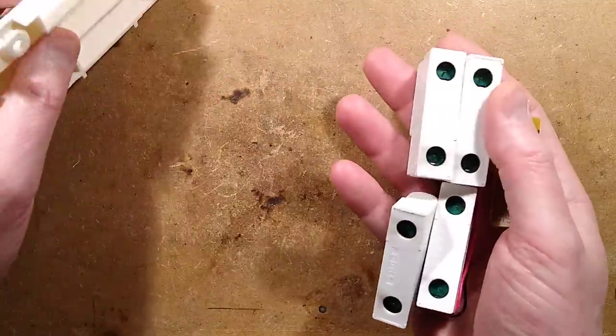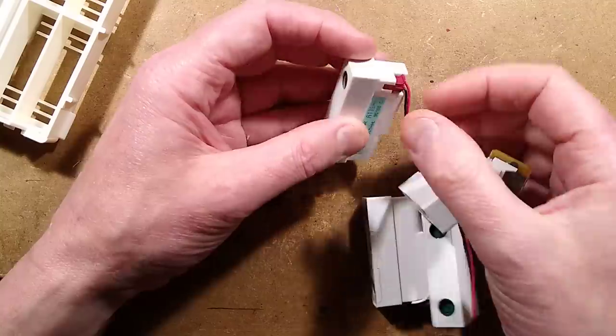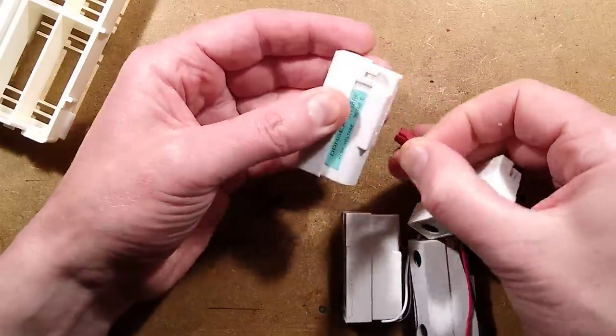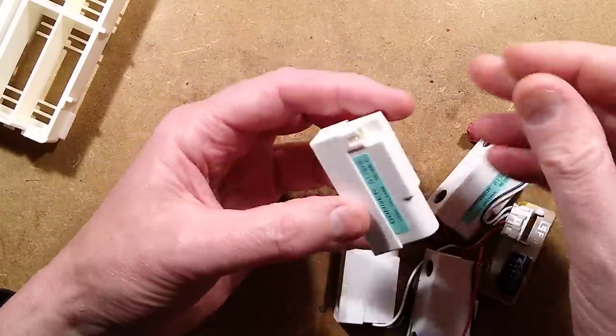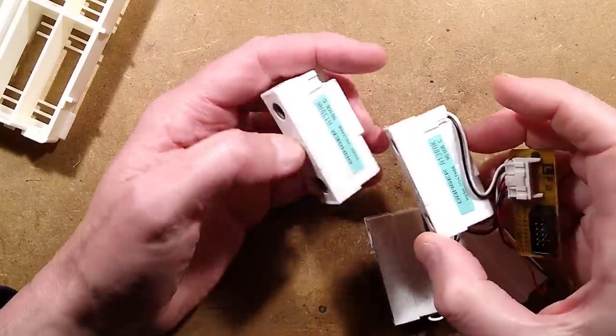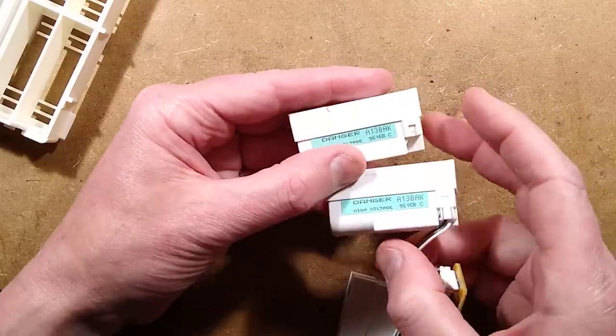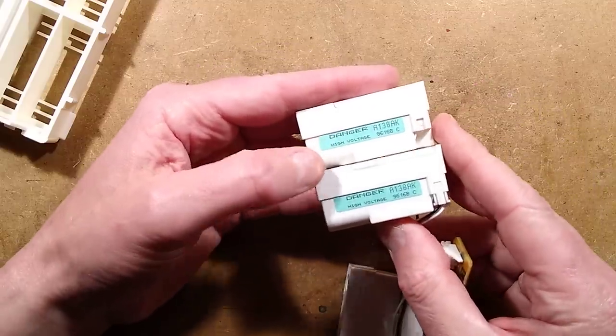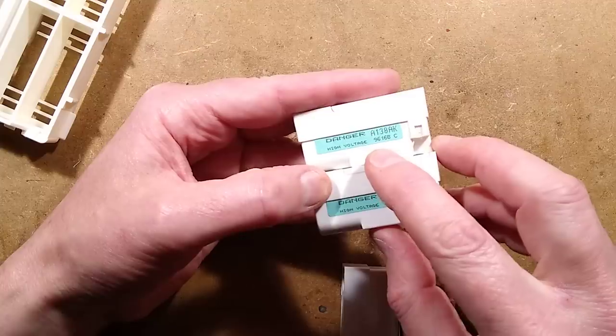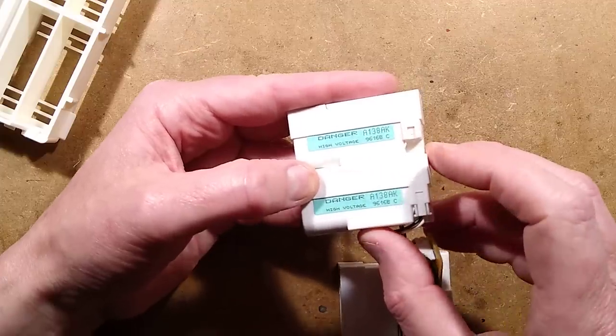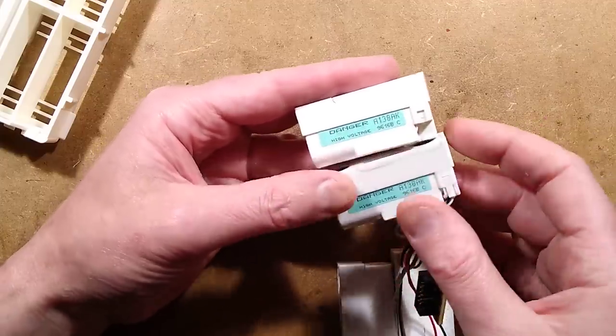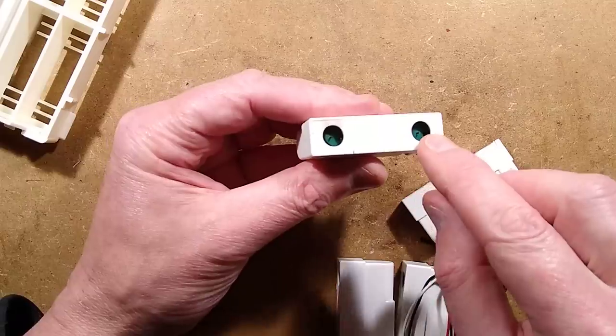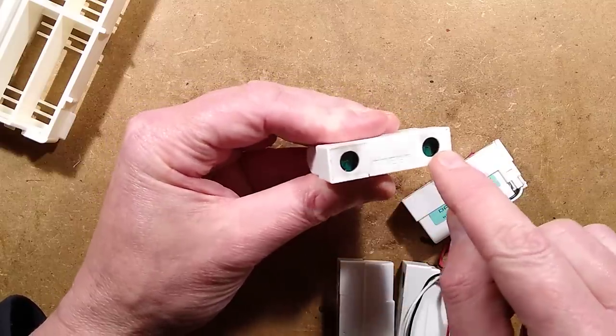It turns out that these units, which all come out individually in really nice cases - everything is nice about this. They've all got the same serial number: danger high voltage, A138AK or should I say unit number, 9616BC. They've all got the same number.